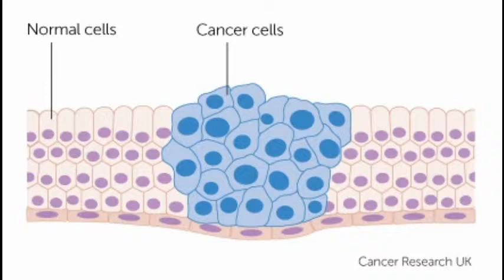For cancer, the key concept is oncogenic transformation. This is the root cause of cancer. When a normal cell is dividing through mitosis, sometimes that mitosis becomes uncontrolled and abnormal — resulting in excessive mitotic division — and this phenomenon is called cancer.